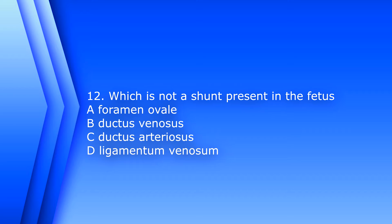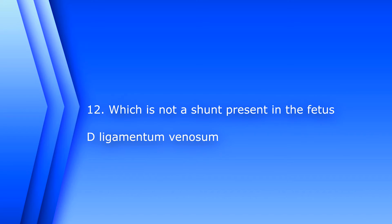Number 12. Which is not a shunt present in the fetus? A. Foramen ovale. B. Ductus venosus. C. Ductus arteriosus. Or D. Ligamentum venosum. The answer is D. Ligamentum venosum. That is a structure seen postnatally, and it is a remnant of the ductus venosus.